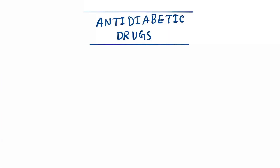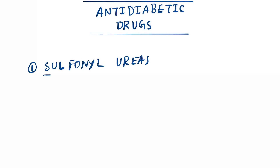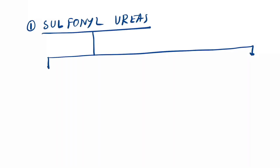Hello friends, today our topic is anti-diabetic drugs. Here we will classify every anti-diabetic drug and the names of the drugs. So let's start. The first category is sulfonylureas, which can be classified into two generations.